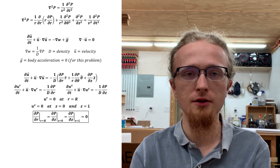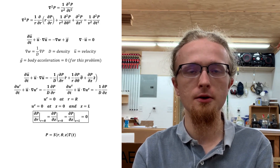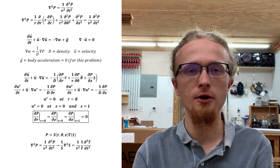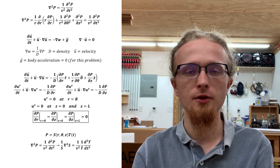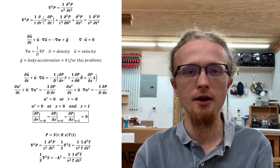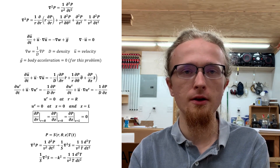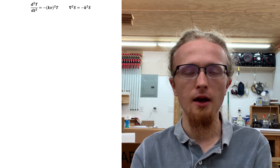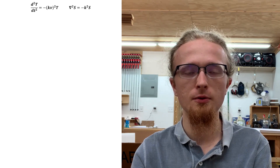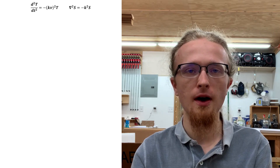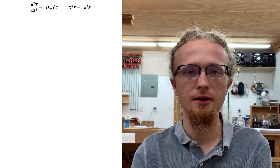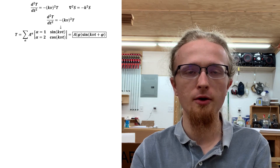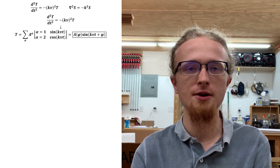Our starting ansatz separates the solution into a time factor and a spatial factor. Inserting that ansatz into the wave equation and dividing by it gives an equation where both sides depend only on variables the other side does not, so both sides are equal to a constant, which I select as negative k-squared for mathematical convenience. This yields two equations: an ODE for the time factor, solved by sines and cosines like a simple harmonic oscillator, and a three-variable spatial PDE that requires further separation of variables.